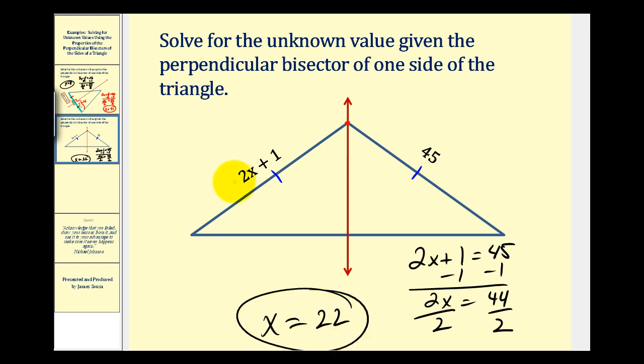And we can check this. 2 times 22 is 44 plus 1 equals 45, which checks because we know these two sides have the same length. And that'll do it for this video. I hope you found these two examples helpful.